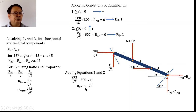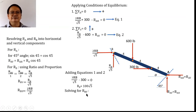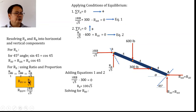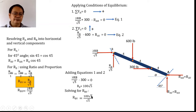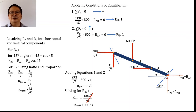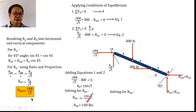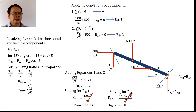Solving for the components: R_BV = R_B/√5 = 100√5/√5 = 100. The √5 terms cancel, giving R_BV = 100. Similarly, R_BH = 2R_B/√5 = 2×100√5/√5 = 200. The √5 terms cancel again, giving R_BH = 200.